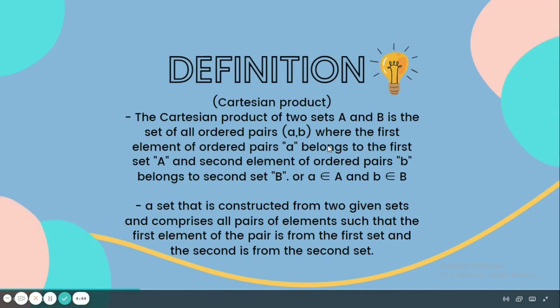Definition: The Cartesian Product of Two Sets A and B is the set of all ordered pairs (a,b) where the first element of ordered pairs a belongs to the first set A, and second element of ordered pairs b belongs to second set B, or a is an element of set A and b is an element of set B.